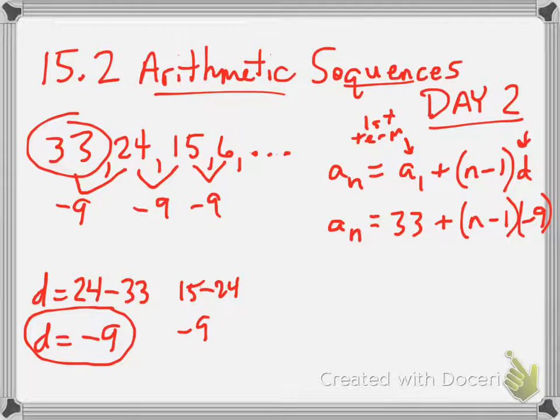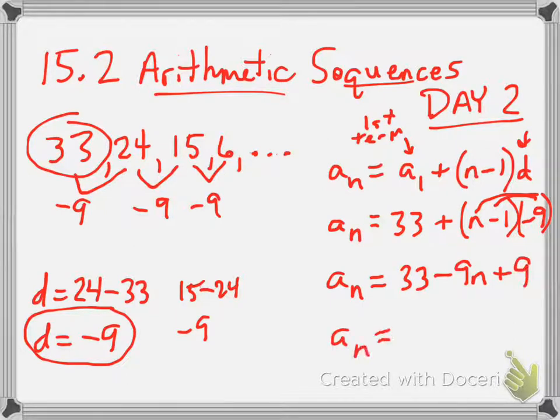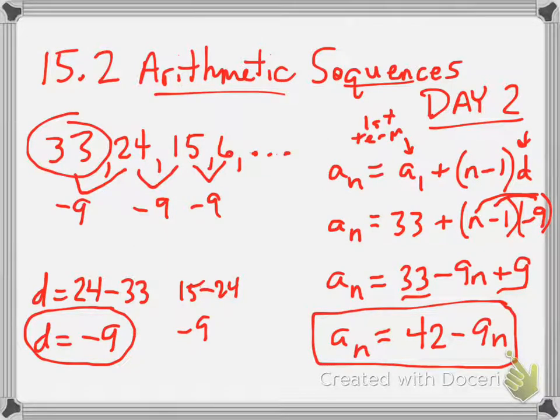So that goes in for a sub 1 plus parentheses n minus 1 times negative 9. So what we do is we distribute the negative 9 through the parentheses. So a sub n equals 33. Now, negative 9 times n is minus 9n. Negative 9 times negative 1 is plus 9. So we combine like terms. So 33 plus 9 is 42 minus 9n. So that's our explicit formula.